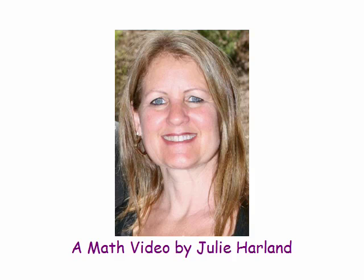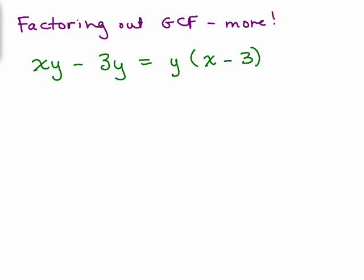Math is cool and you can do it. Continuing with factoring out the greatest common factor, let's review. If we were to factor xy minus 3y, y is the common factor and so we get y times x minus 3.